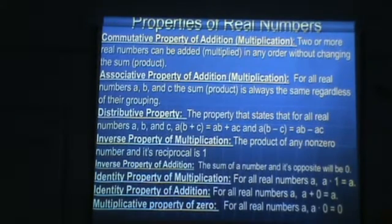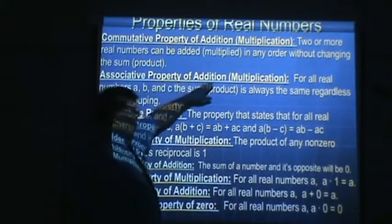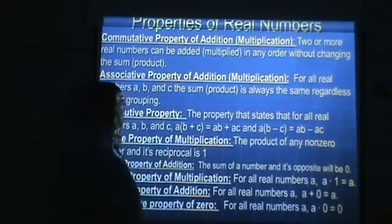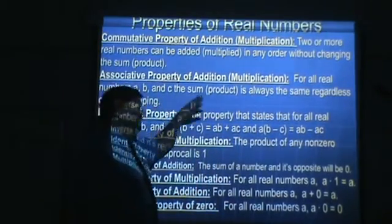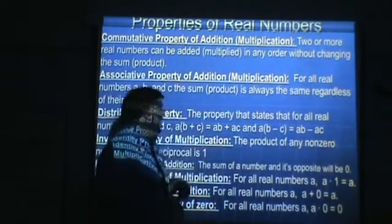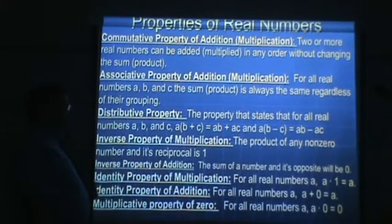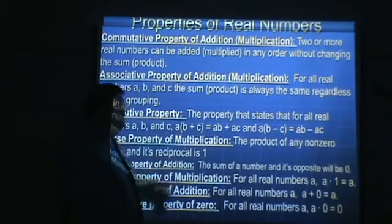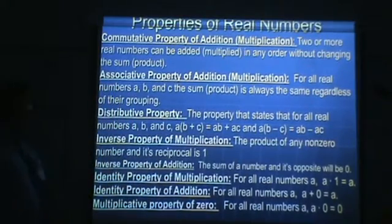The next property is the associative property. There's the associative property of addition and the associative property of multiplication. For all real numbers A, B, and C, the sum is always the same regardless of their grouping. The same is true for the product when you're multiplying — if the grouping changes, the result stays the same.